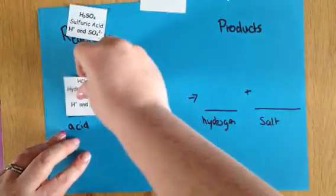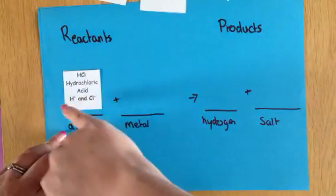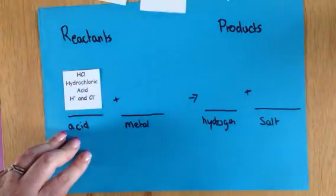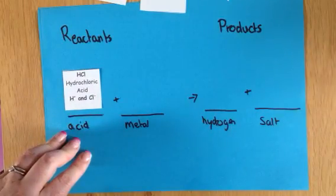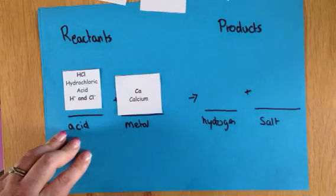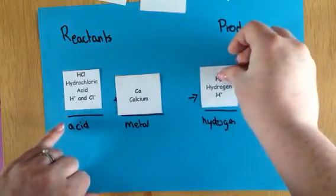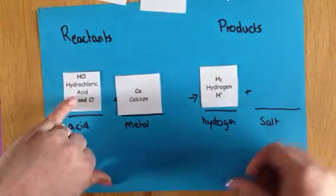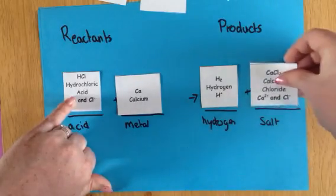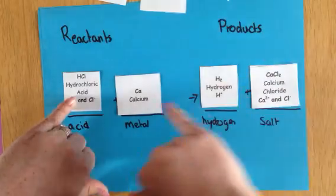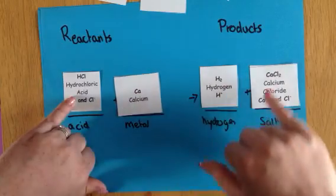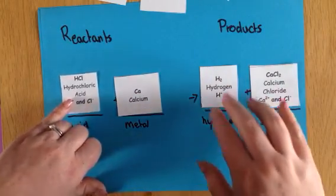It works the same with different types of acids. So here we have hydrochloric acid — we have hydrogen ions — and we're going to be reacting that with calcium. We're going to take our hydrogen ions away as hydrogen gas, and our products are going to be the two things that are left over: the chloride ions and the calcium ions, and that is going to be calcium chloride.